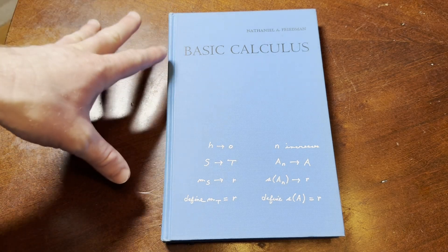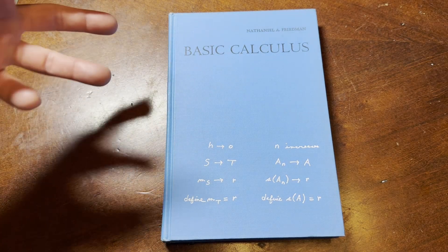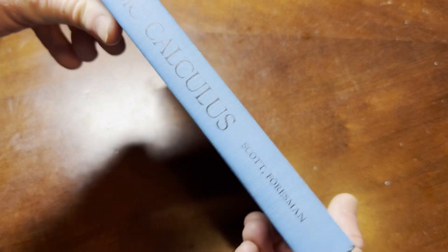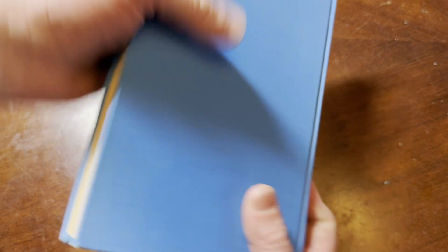This is a fun little book called Basic Calculus, written by Nathaniel A. Friedman. I love how it's blue, and it's an older book. I'm going to give it a whiff here.